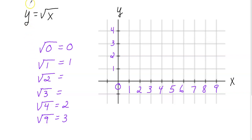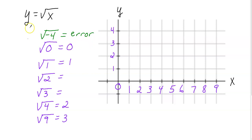You should also notice I didn't deal with any negative values — for example, the square root of negative four. I didn't deal with that because if you punch it into the calculator, you will get an error. I'm not gonna get into the reasons why in this video, but that's the reason we're just sticking with positive x values.